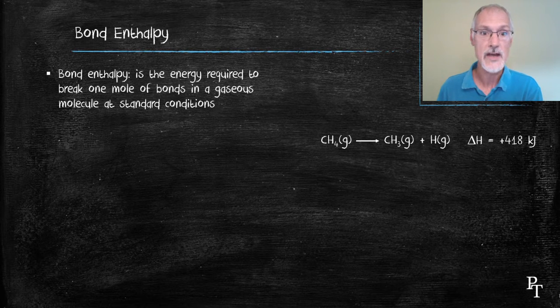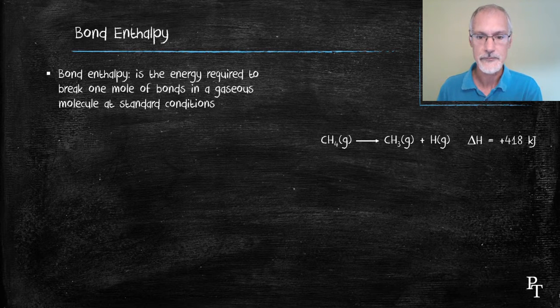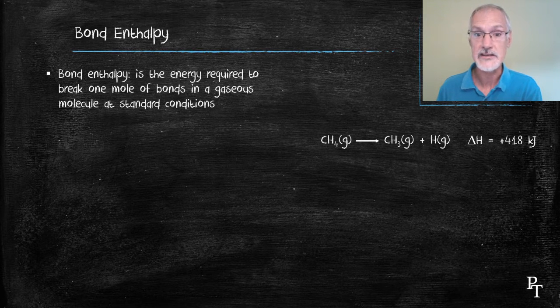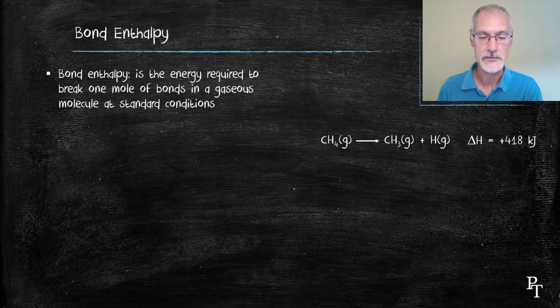So if I take for instance molecule methane which has four carbon hydrogen bonds, I'm just going to break one of them. And that requires 418 joules of energy to pull that hydrogen off from the methane molecule.